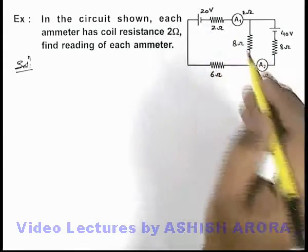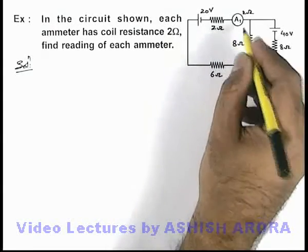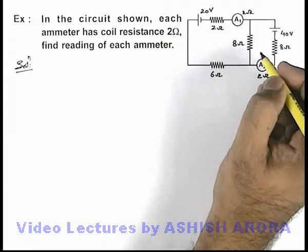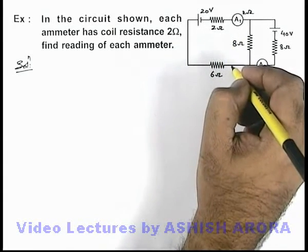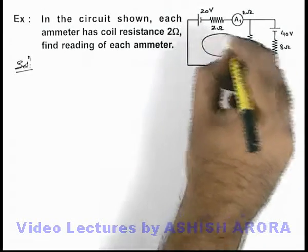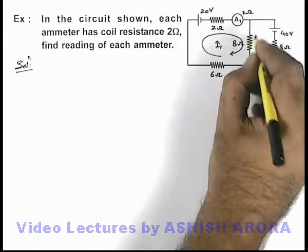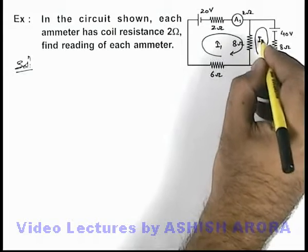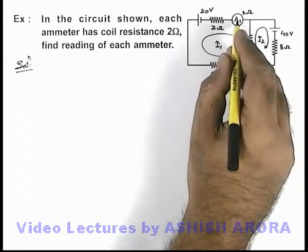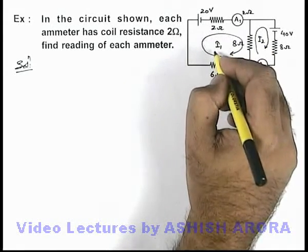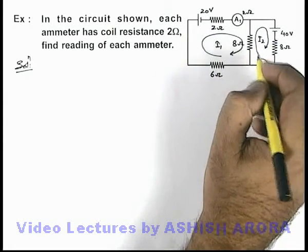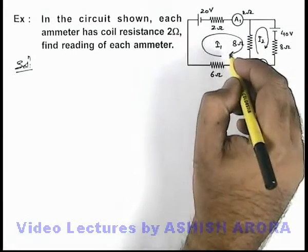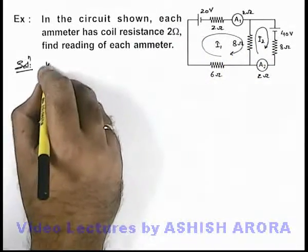We are required to find the current flowing through these branches. We can use Kirchhoff's Voltage Law, or you can also solve it by using Kirchhoff's Current Law. Right now I am handling it with the help of Kirchhoff's Voltage Law. In this situation, say if I consider a current i1 flowing clockwise in this loop and a current i2 flowing clockwise in this loop. So the reading of ammeter A1 will be i1, and the reading of ammeter A2 will be current i2. To determine the values of i1 and i2, we just write down the KVL equations.